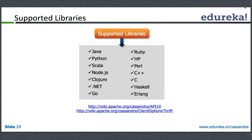A list of supported Thrift libraries includes Java, Python, Scala, and .NET. Hector is one of the Java APIs for connecting to Cassandra. You can use any of these languages, or write your own client if you're familiar with Thrift. If not, by default you can use Java with Hector to communicate with Cassandra.